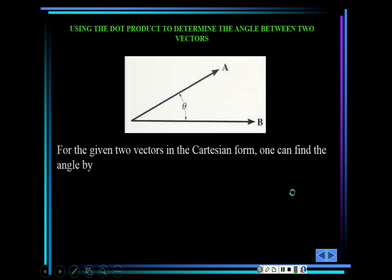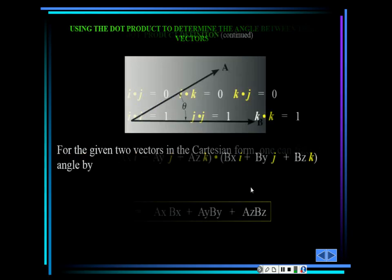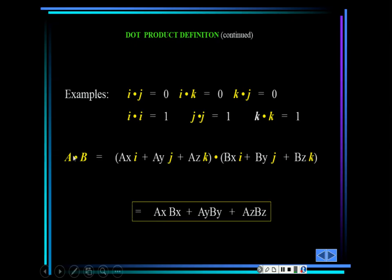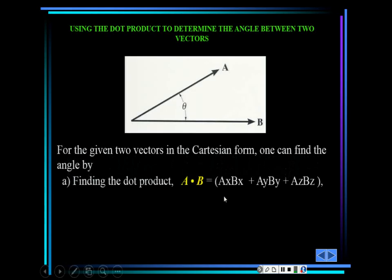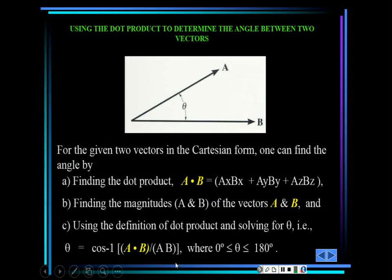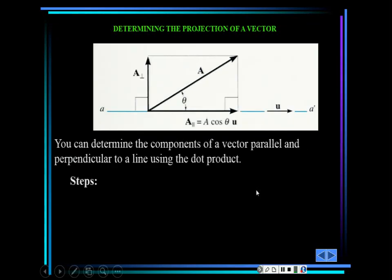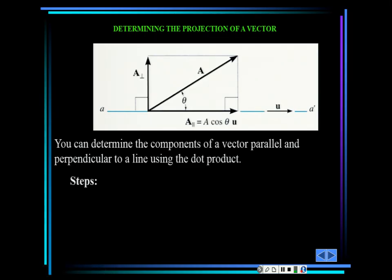The result of a dot product is always a scalar. You can find the angle between two vectors by computing the dot product component-wise, then dividing by the product of the two magnitudes: cos(θ) = (A·B) / (|A||B|). Take the inverse cosine to get the angle. Every time you compute a force component as F·cos(θ), you're essentially using a dot product with the unit vector along that axis.